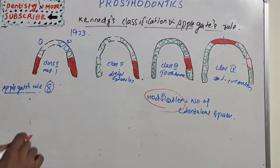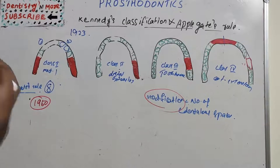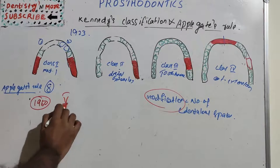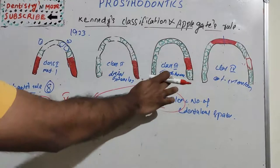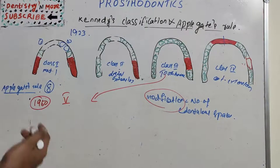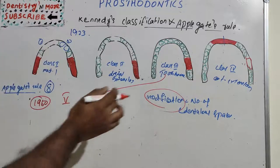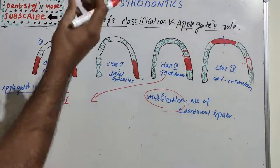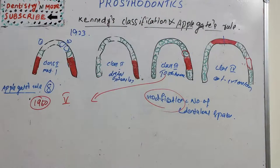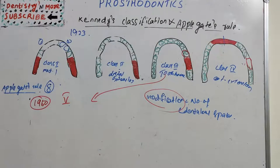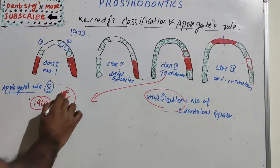Applegate modified the classification in 1960 on the condition of abutment to include two additional groups: Class 5 and Class 6. Class 5 is a modification of Class 3 — it is an edentulous area bounded anteriorly and posteriorly by natural teeth, but where the anterior abutment is not suitable for support. So it is basically Class 3 where the anterior abutment cannot be used.